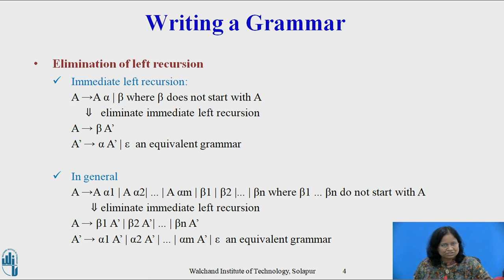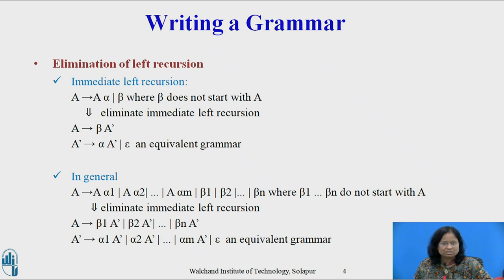Eliminating left recursion: A left recursive production can be eliminated by rewriting the offending production. Consider a non-terminal A with two productions A derives Aα or β, where β does not start with A. We replace the A production by A derives βA' and A' derives αA' or ε, which is an equivalent grammar. No matter how many A productions there are, we can eliminate the immediate left recursion from them using the following technique.